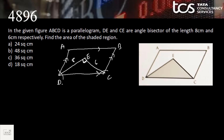In the case of a parallelogram, corresponding angle bisectors meet each other at 90 degrees. That means triangle DEC is a right-angle triangle. So the area of this triangle is half × base × height = half × 8 × 6 = 24 square centimeters.